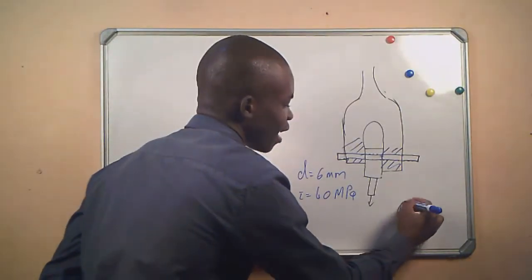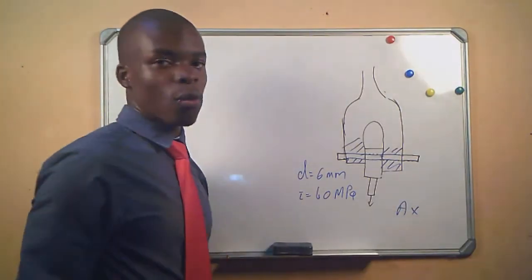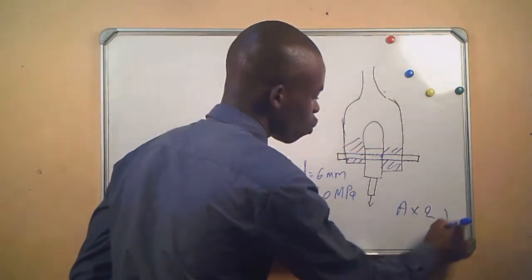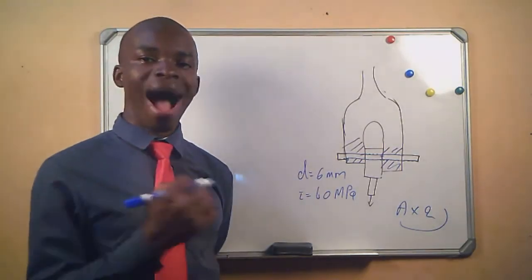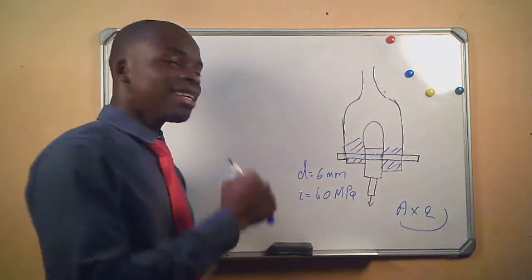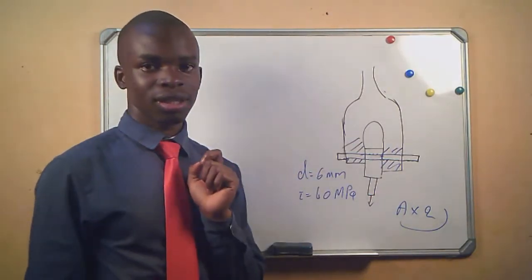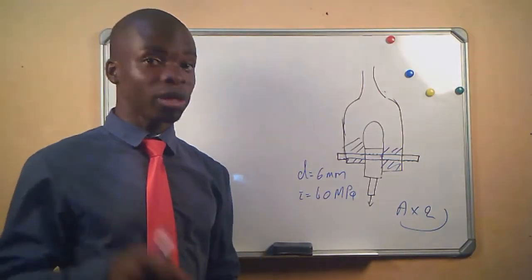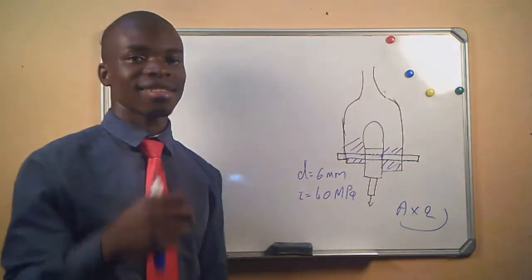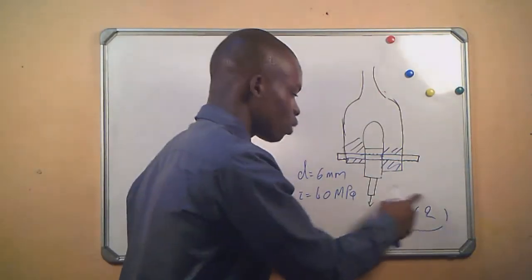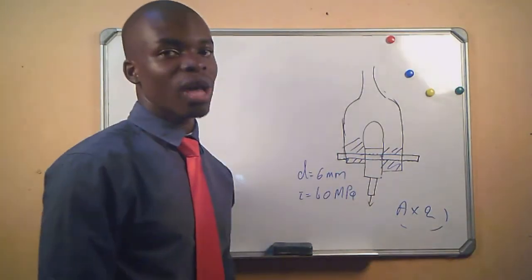When we calculate the area we are going to say times two, the area of the pin. Why? Because there is a certain amount of force that is needed to shear in this position and that force must be doubled if now we have two areas.